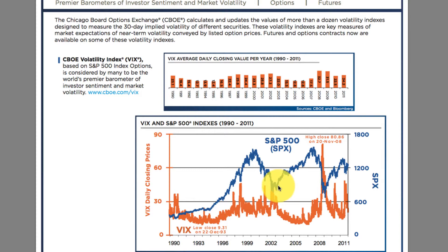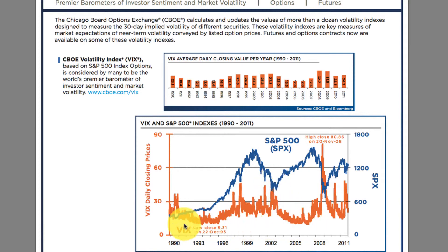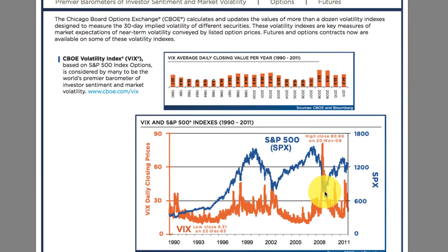From 2002 onwards, the S&P 500 started going up and the VIX started coming down — from a level of about 45 in 2001-2002, the VIX dropped back down to about 15 or slightly lower. Then we had the financial crisis of 2007-2008, mostly 2008 and 2009. The S&P started crashing again, coming almost all the way down to 600, while the VIX went from a level of about 12 all the way up to 80.